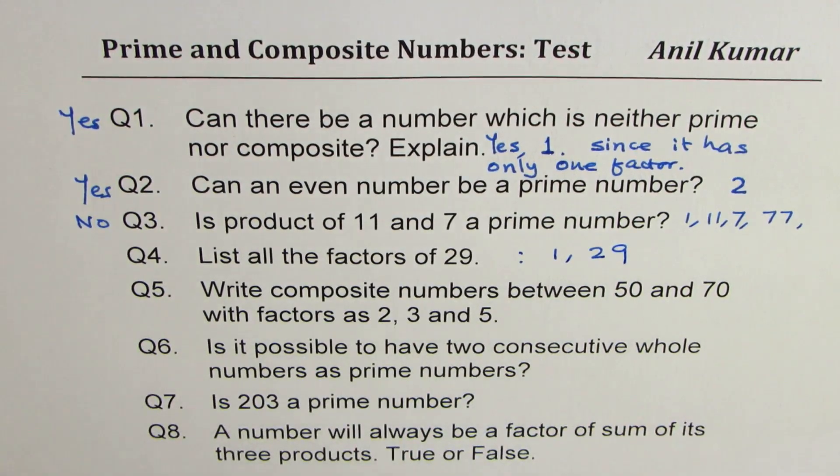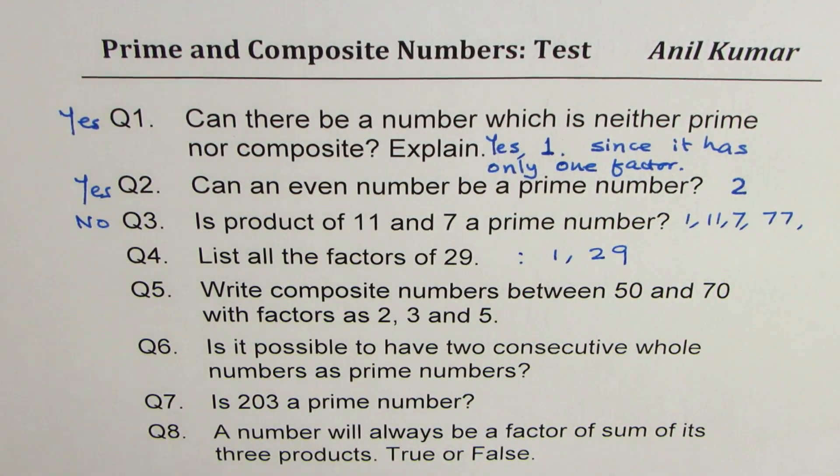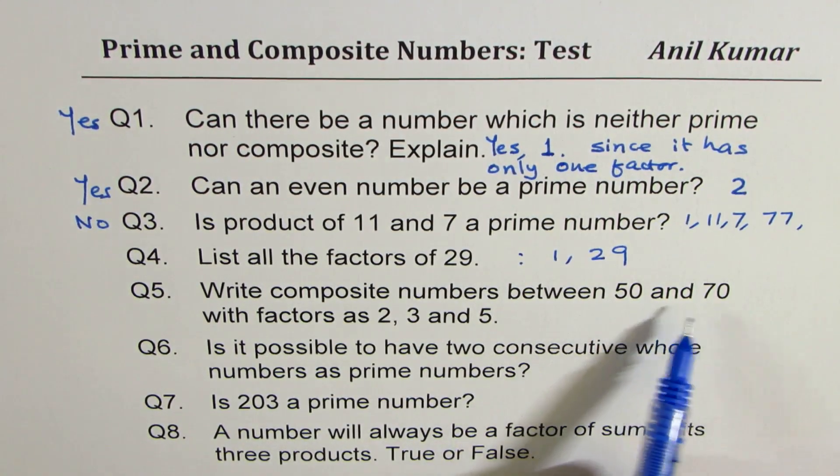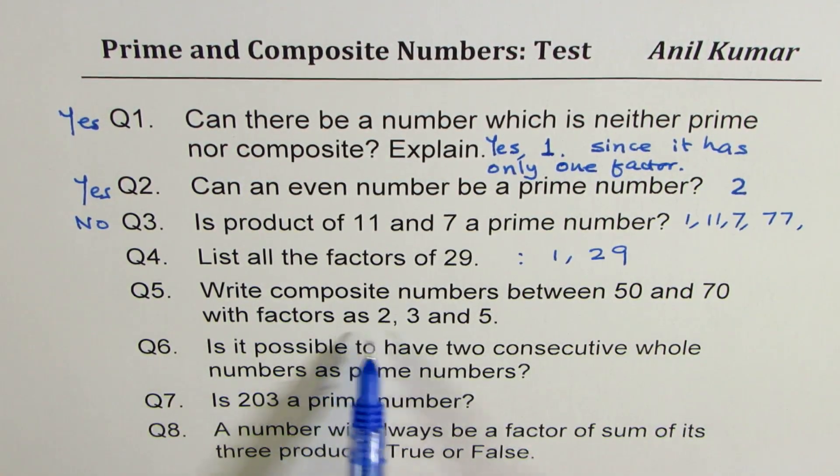List all factors of 29. The factors are 1 and 29 since 29 is a prime number.